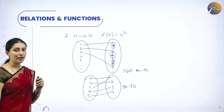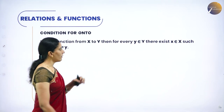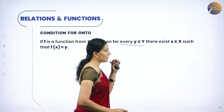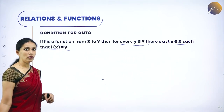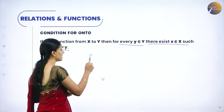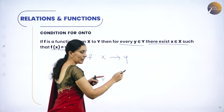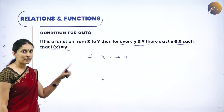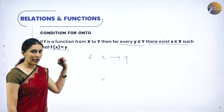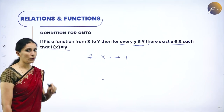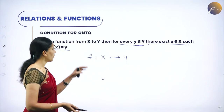The condition for onto: for every element y in set Y, there exists an element x in set X such that f(x) = y. This condition must be verified to show that a given function is onto.